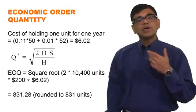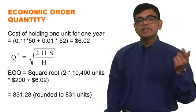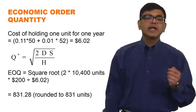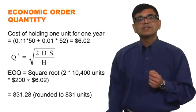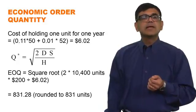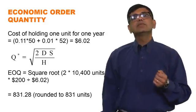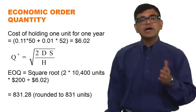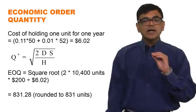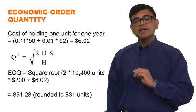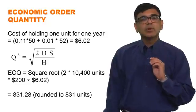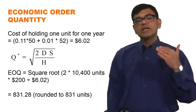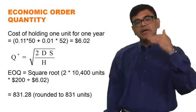To compute the EOQ, we have an annual demand of 10,400 units, a setup cost of $200, and a holding cost of $6.02 per unit per year (calculated earlier). Plugging into the EOQ formula gives 831.28 units, which we round to 831 units since we're dealing in whole cell phones. Recall that the EOQ is robust, meaning moving slightly above or below 831 has minimal impact on total cost — you could verify this with a spreadsheet.